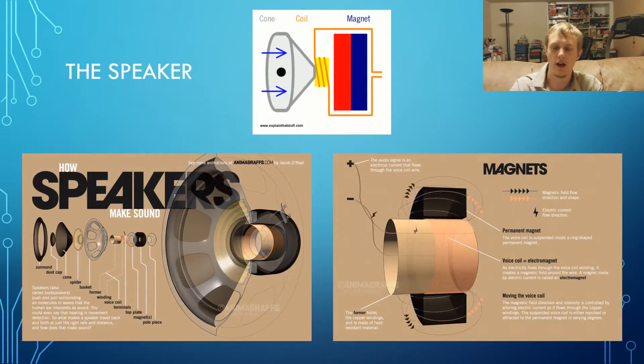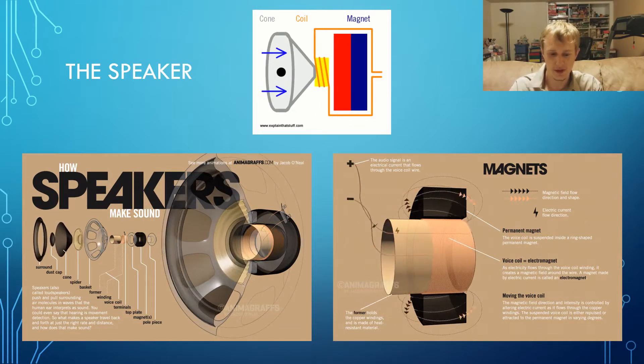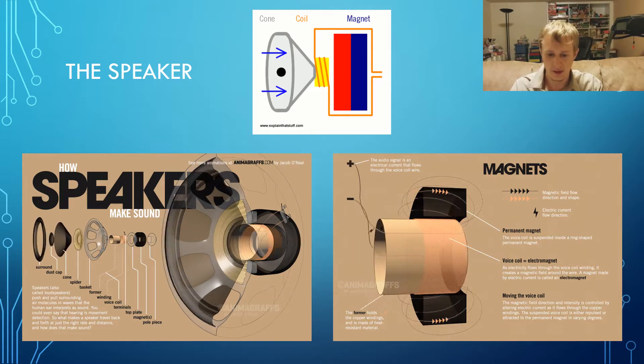Now let's consider how the output load, the speaker, works. I found a few animated GIFs which show how a speaker works in detail with all the various components used in the speaker. But let's focus on the GIF I used at the top, which simplifies the speaker into its three main components: the cone, the coil, and the magnet.